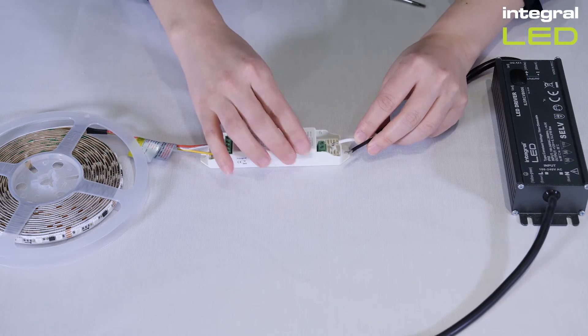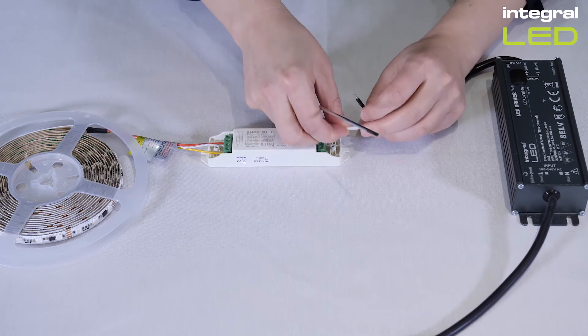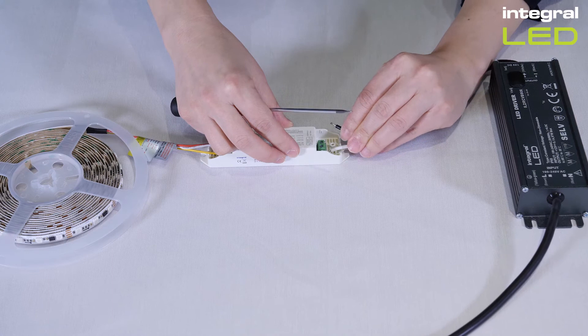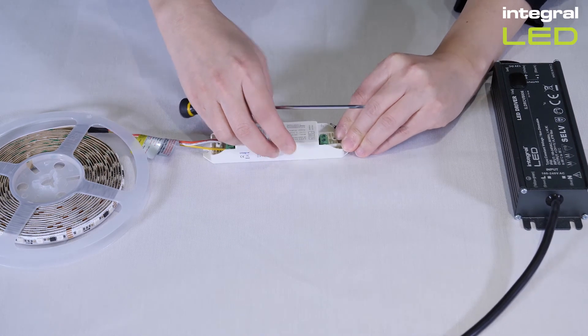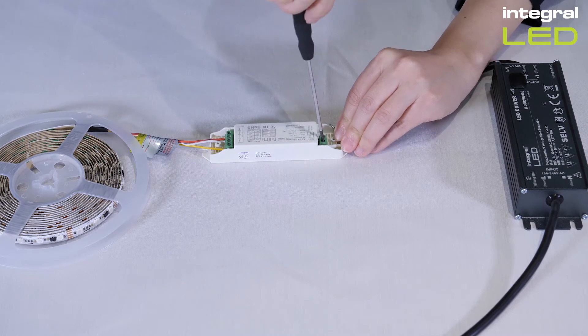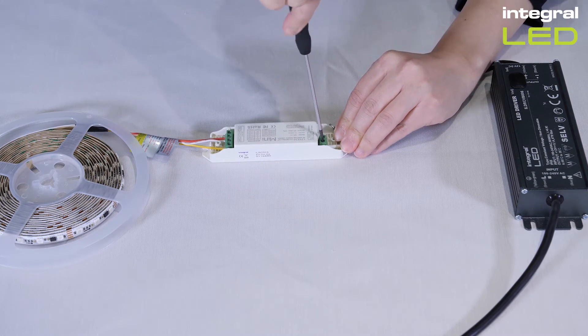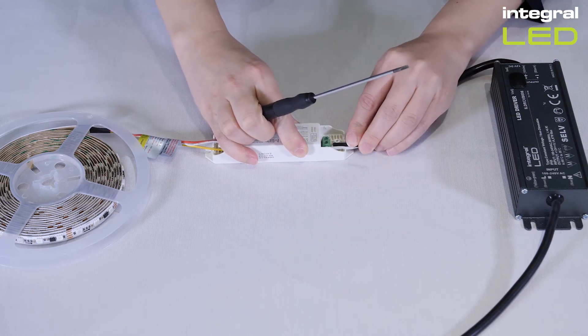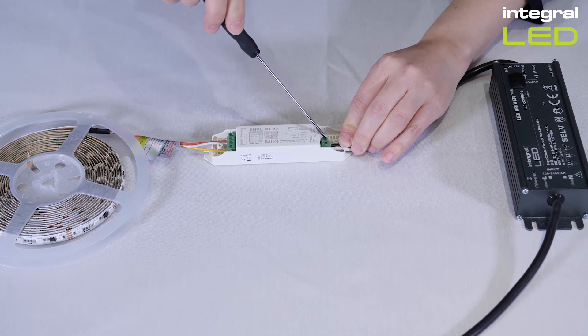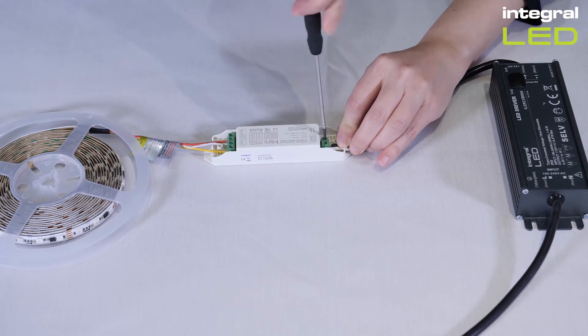Connect the two wires from the driver output to the input terminal on the receiver. White, positive, connects to DC plus. Black, negative, connects to DC minus. As with the wires from the strip, insert each wire into the correct terminal connection and screw tightly. Give the wires a gentle tug to make sure they are securely connected to the receiver.